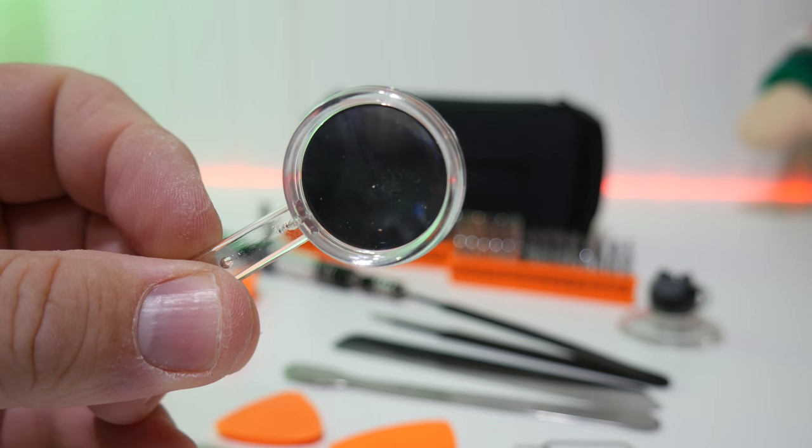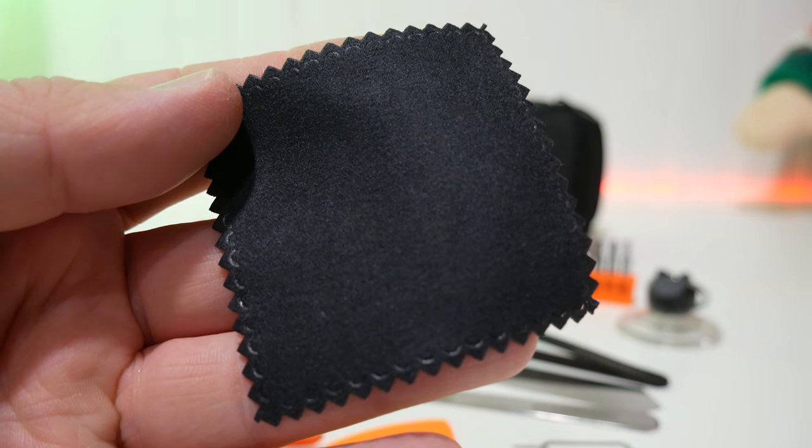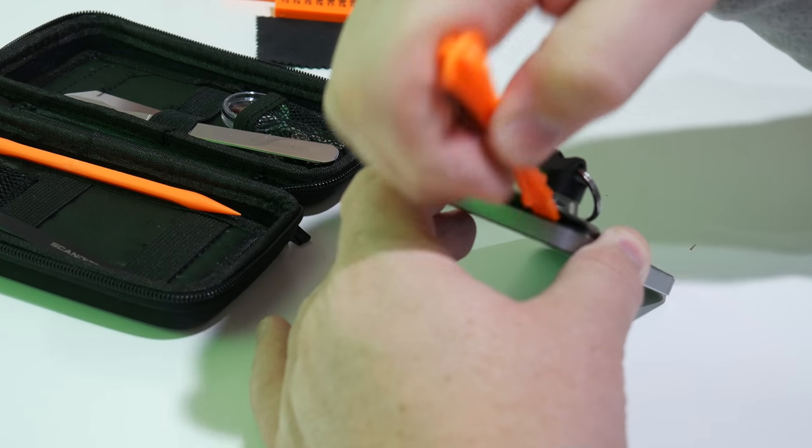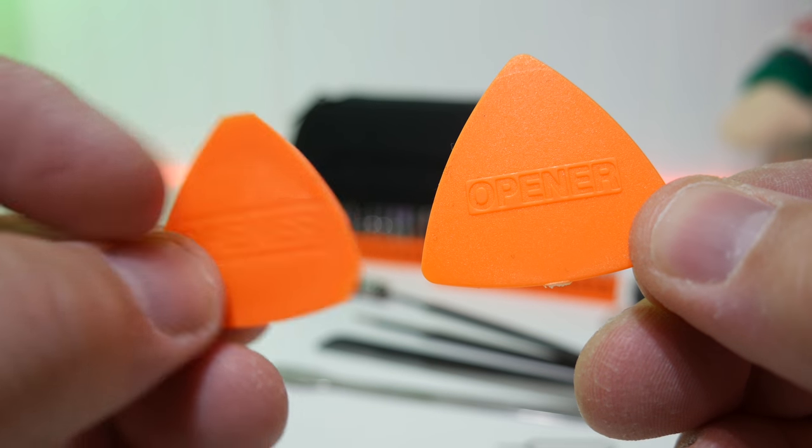You get a magnifying glass great for tiny spots, a microfiber, nylon spudger for prying and poking, a nylon opening tool great for prying off your screens, and two plectrum opening tools in different designs.